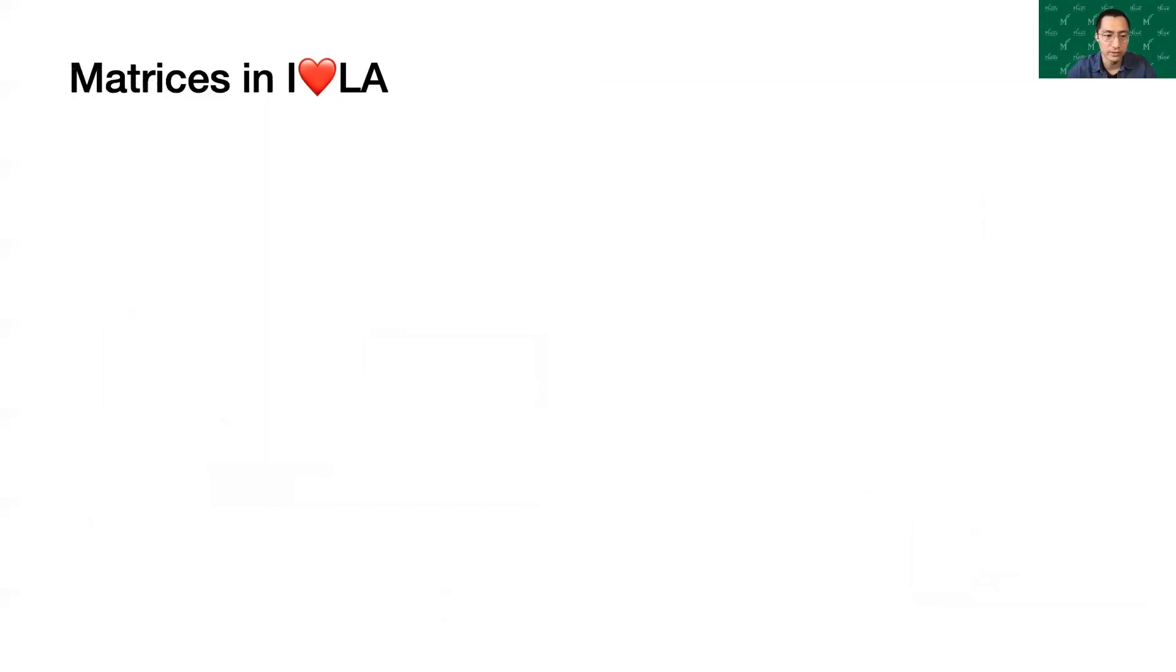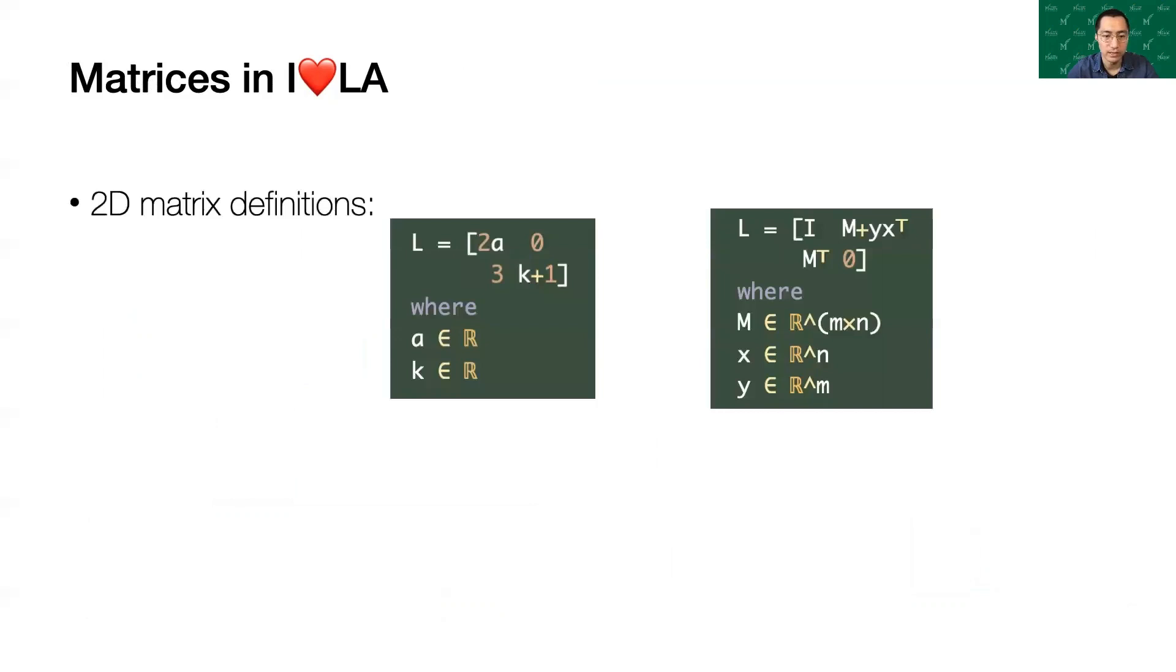Variable names cannot be redefined. Compatible matrix and vector dimensions are statically checked at compile time. I❤LA supports sparse and dense matrices. Matrices can be formatted with 2D elements, separated by spaces and new lines. In the left example, A and K are both scalars. It defines L as a normal 2 by 2 matrix.